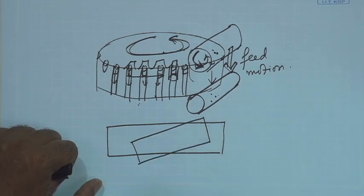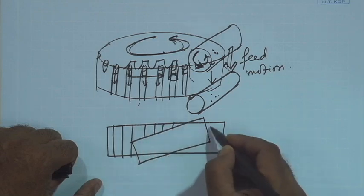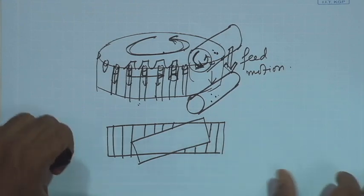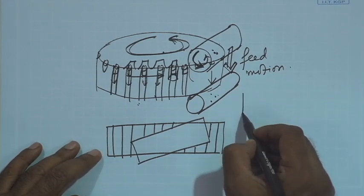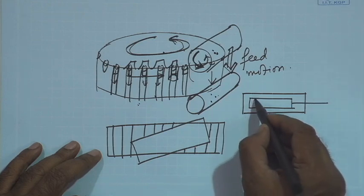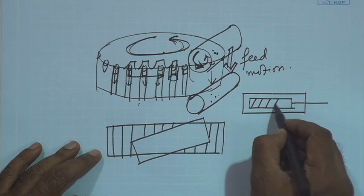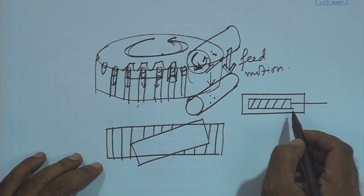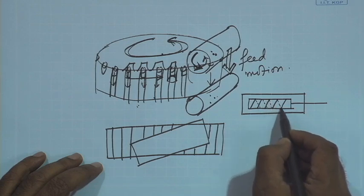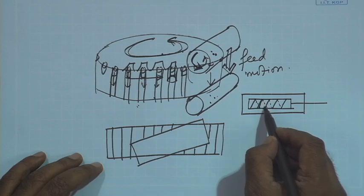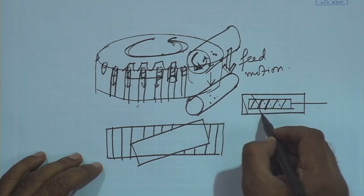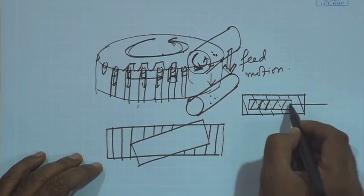When cutting a spur gear, typically the hob will be inclined at an angle. You are cutting teeth like this and the hob is typically inclined at an angle. Please recall that when engaging the worm gear with the worm, the worm has a particular thread — the thread has a particular helix angle. This helix angle on the other side has to match with the teeth on the worm gear, so ordinarily the worm gear teeth will be slightly inclined.